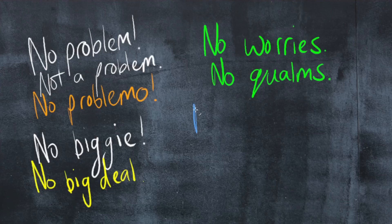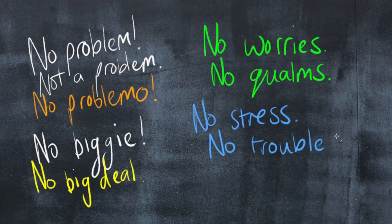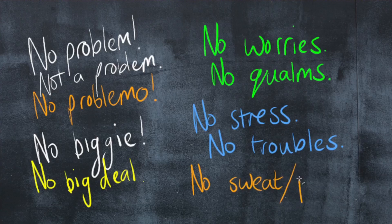I do say 'sure' a lot, but I use the next category even more, and that is phrases beginning with 'no.' So here we have: 'no problem,' 'not a problem,' 'no problemo,' 'no biggie,' 'no big deal,' 'no worries,' 'no qualms,' 'no stress,' 'no troubles,' 'no sweat,' 'no fret.' And the one I use most is 'no problem' — I think I use this like 90% of the time. Most English speakers do tend to use this one a lot.